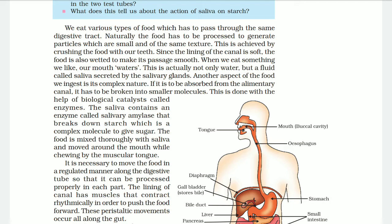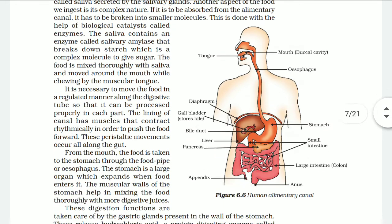Another aspect of the food we ingest is its complex nature. For it to be absorbed from the alimentary canal, it has to be broken into smaller molecules, and this is done with the help of biological catalysts called enzymes. The saliva contains an enzyme called salivary amylase, which breaks down starch — a complex molecule — into sugar. The food is mixed thoroughly with saliva and moved around the mouth while chewing by the muscular tongue. So the digestion process starts from the mouth itself, where the salivary gland produces saliva and mixes with the food to make it soft and easy to break down.